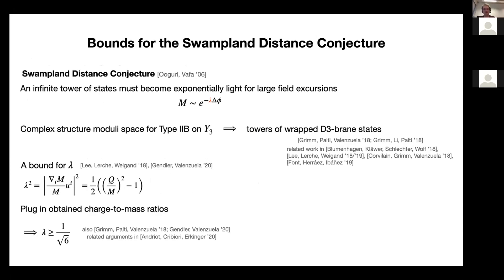The other conjecture we can take a look at is the distance conjecture. There it was already spelled out how we can relate the decay rate of the tower of states to the charge-to-mass ratios. If we then plug in the formula we have for the charge-to-mass ratio we obtain a bound that was already noted before in the literature. The broader way to think about it is that depending on the theory you have you should plug in a different value for the charge-to-mass ratio, and our formula also applies to one of these singular cases where the discrete coefficients d_i — the differences — are equal to zero.